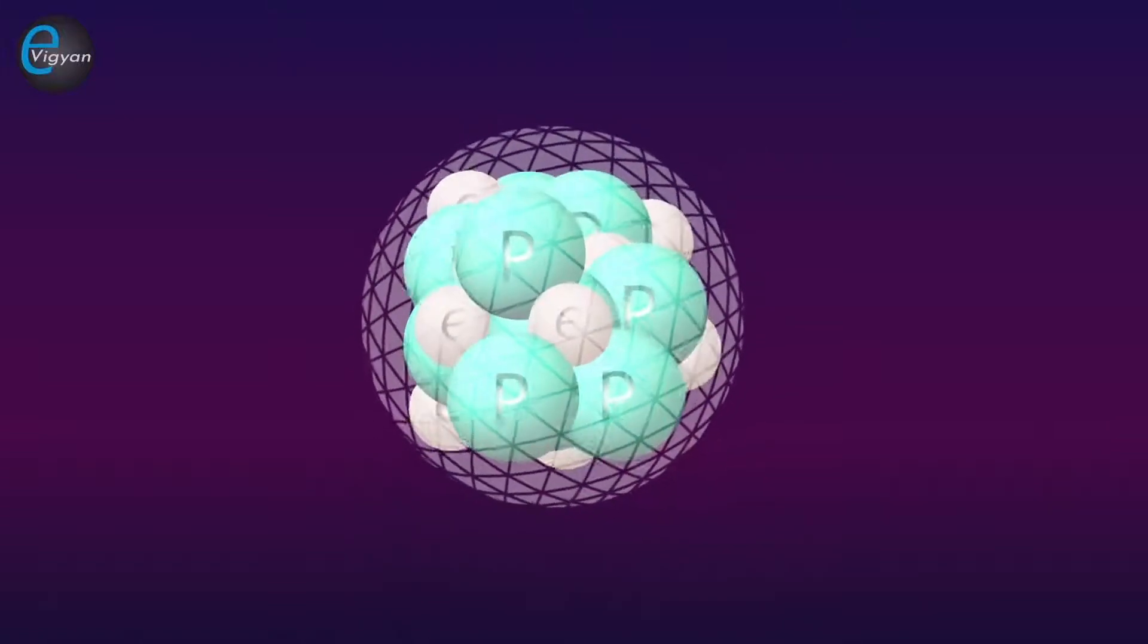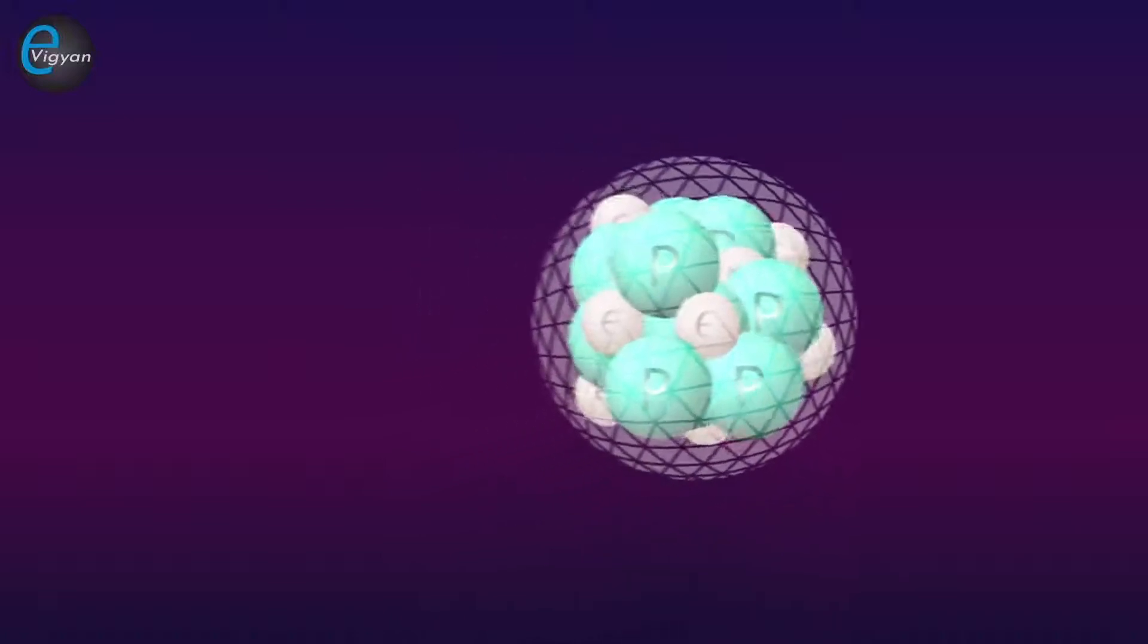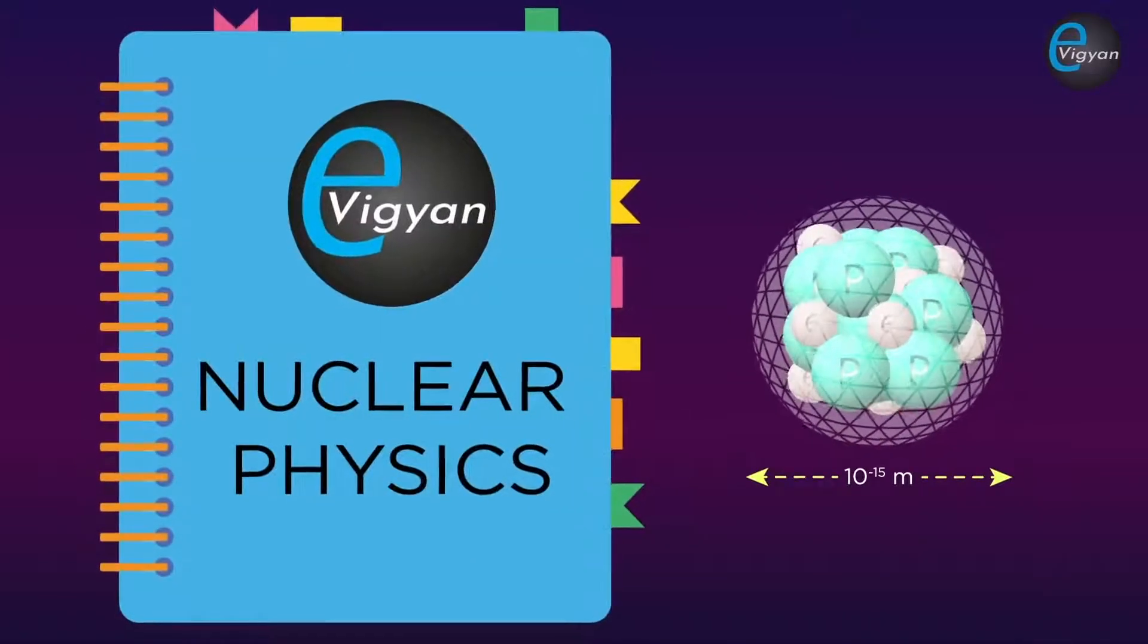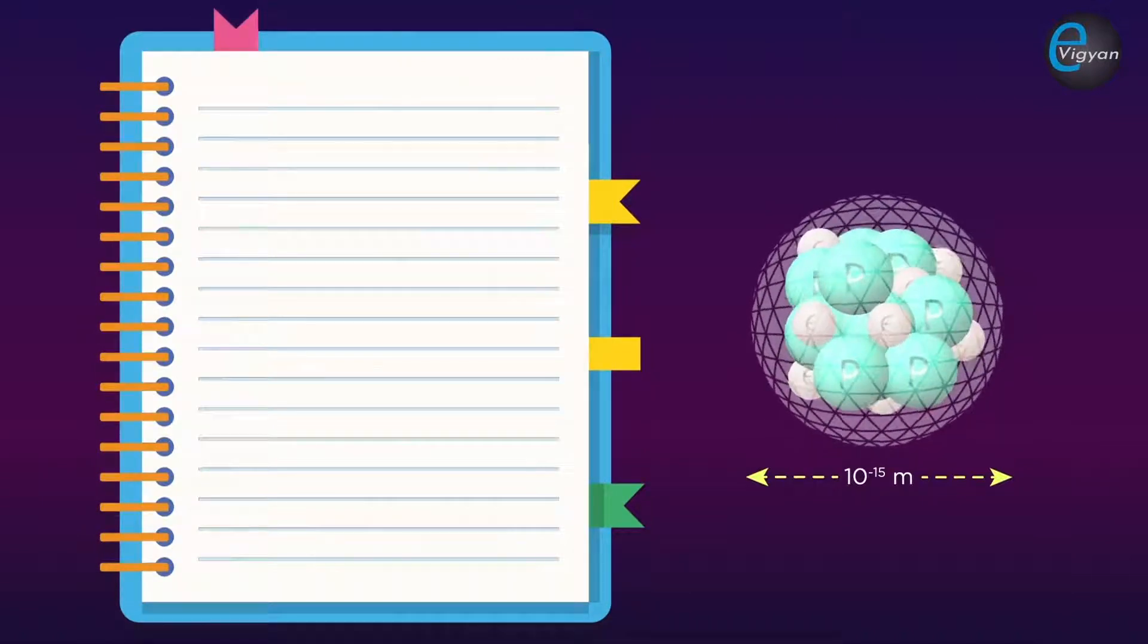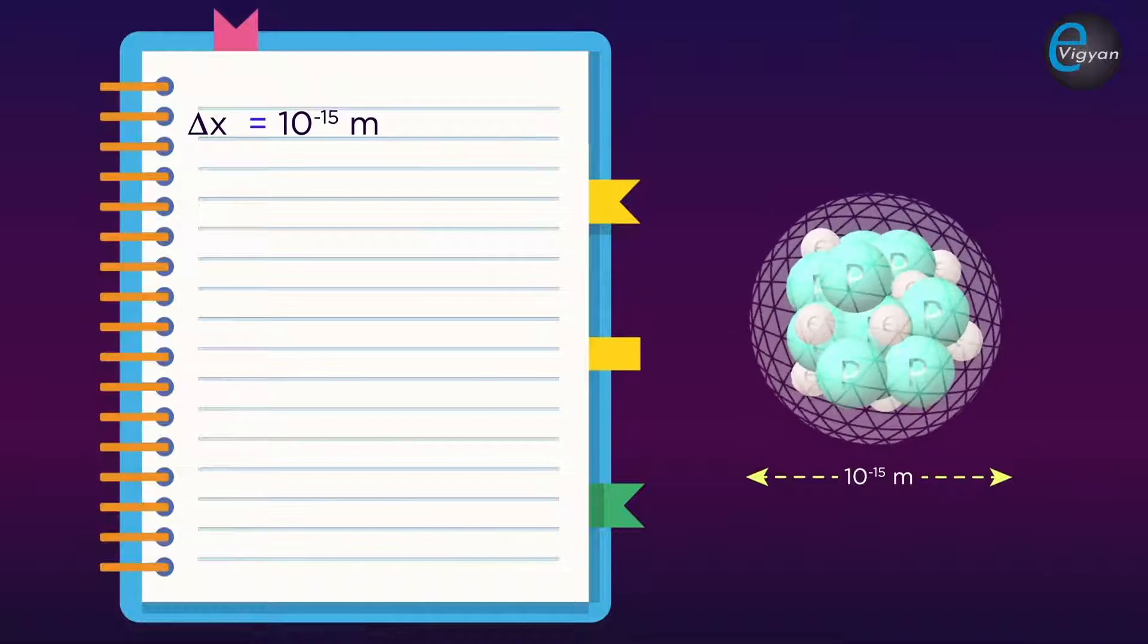If the electron has to be within the nucleus, then its de Broglie wavelength had to be of the order of size of the nucleus. Since the size of a nucleus is in the order of 1 Fermi, we can write the uncertainty in position of the electron as Δx equal to 10^-15 meter.